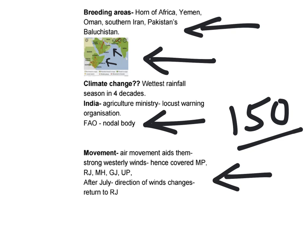Hence these locusts have covered the areas of Madhya Pradesh, Rajasthan, parts of Maharashtra, Gujarat, parts of Western UP, and it is predicted they can be seen as far as Odisha, Chhattisgarh, Jharkhand, and West Bengal. However, after July, due to seasonal wind changes, the direction will reverse and these will return back to Rajasthan.